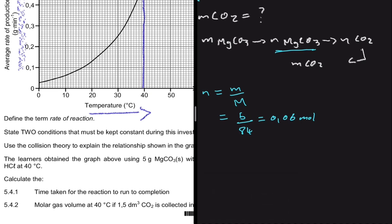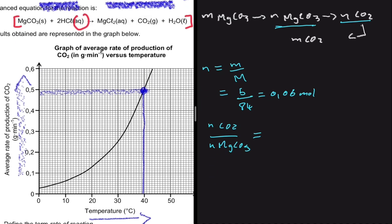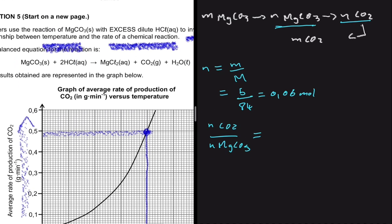Using the mole ratio, the number of moles of CO2 divided by moles of MgCO3 equals the ratio of balancing coefficients. From the equation, both coefficients are 1, so moles of CO2 equals moles of MgCO3, which is 0.06 moles.